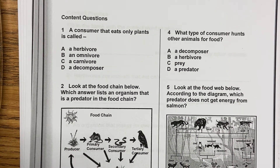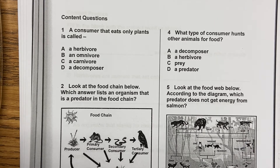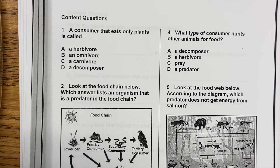Now we're going to look at the content questions. These questions are directly stated in the passage, so you should be able to go back into the passage and find the answers. If you need to pause between questions to go back and look for the answer, feel free to do that. I'm just going to read through the six questions on this page. Question one: A consumer that eats only plants is called — A, an herbivore; B, an omnivore; C, a carnivore; D, a decomposer.